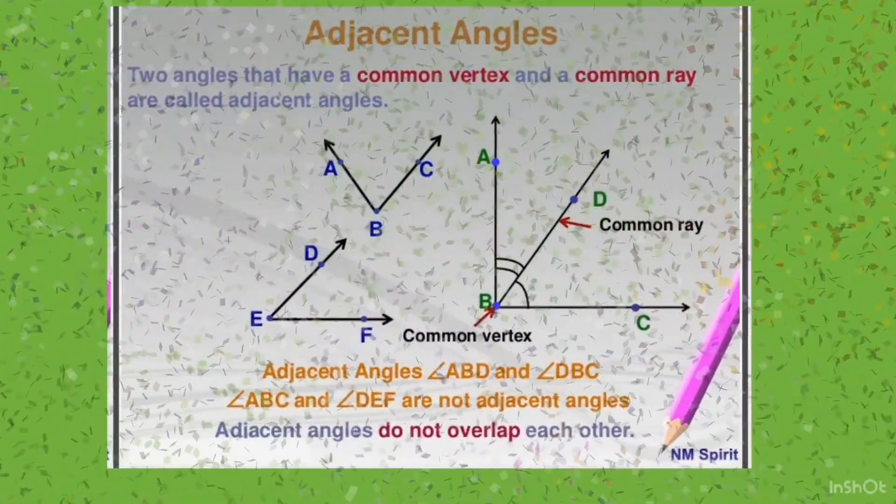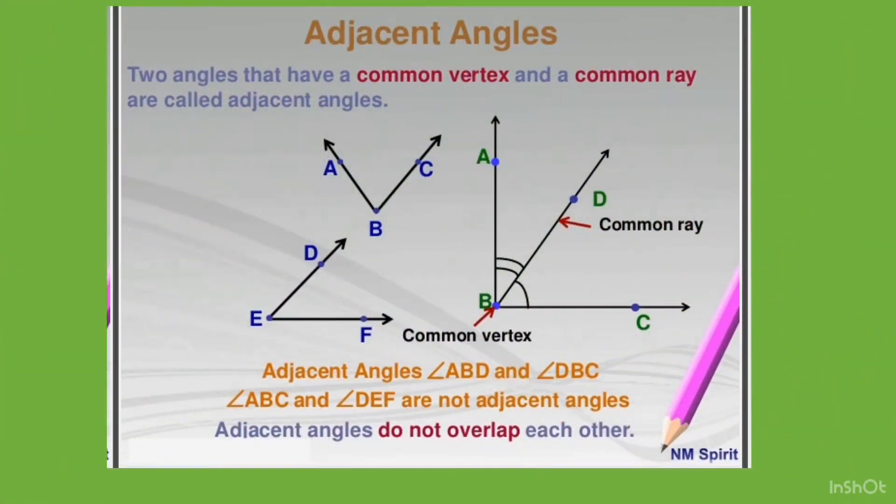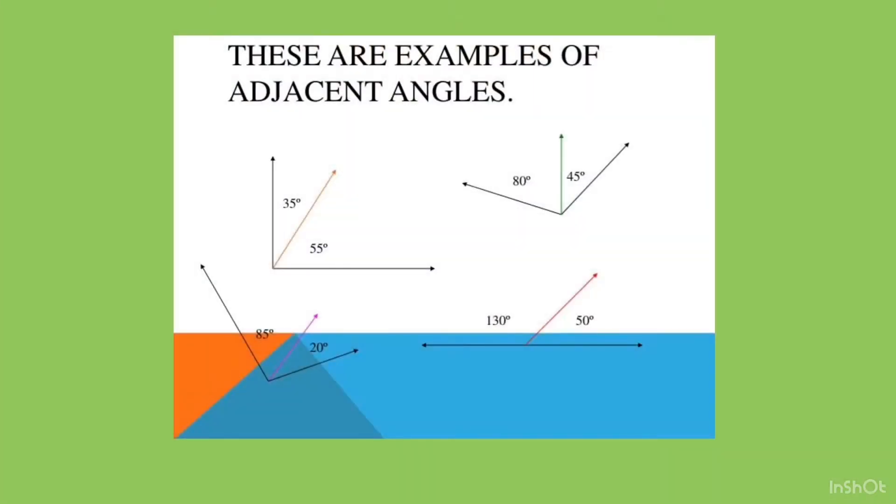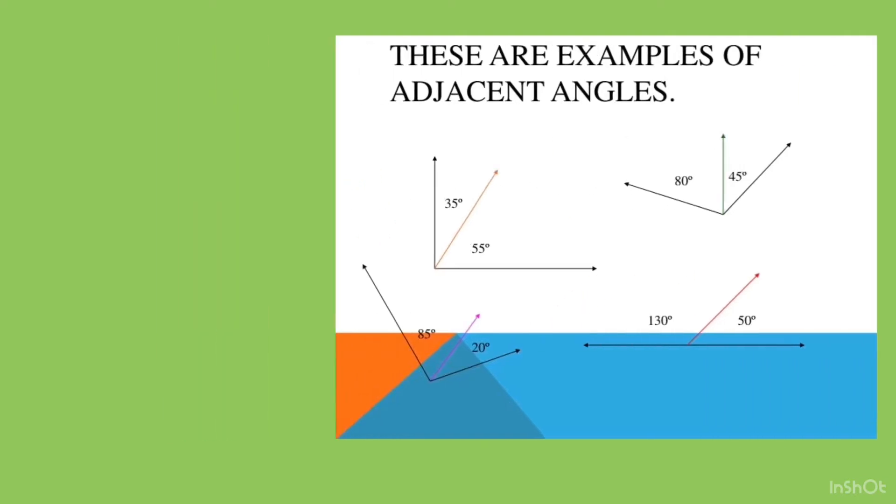First is adjacent angles. Two angles that have a common vertex and a common ray are called adjacent angles. These angles do not overlap each other. These are some examples of adjacent angles.